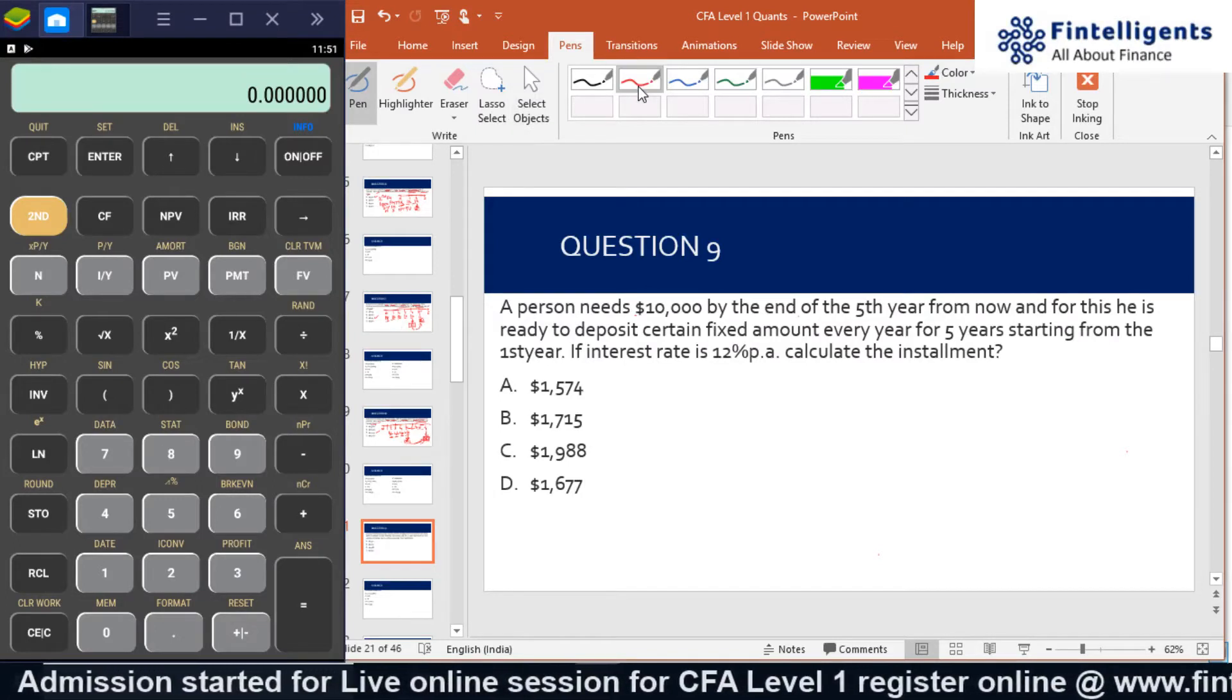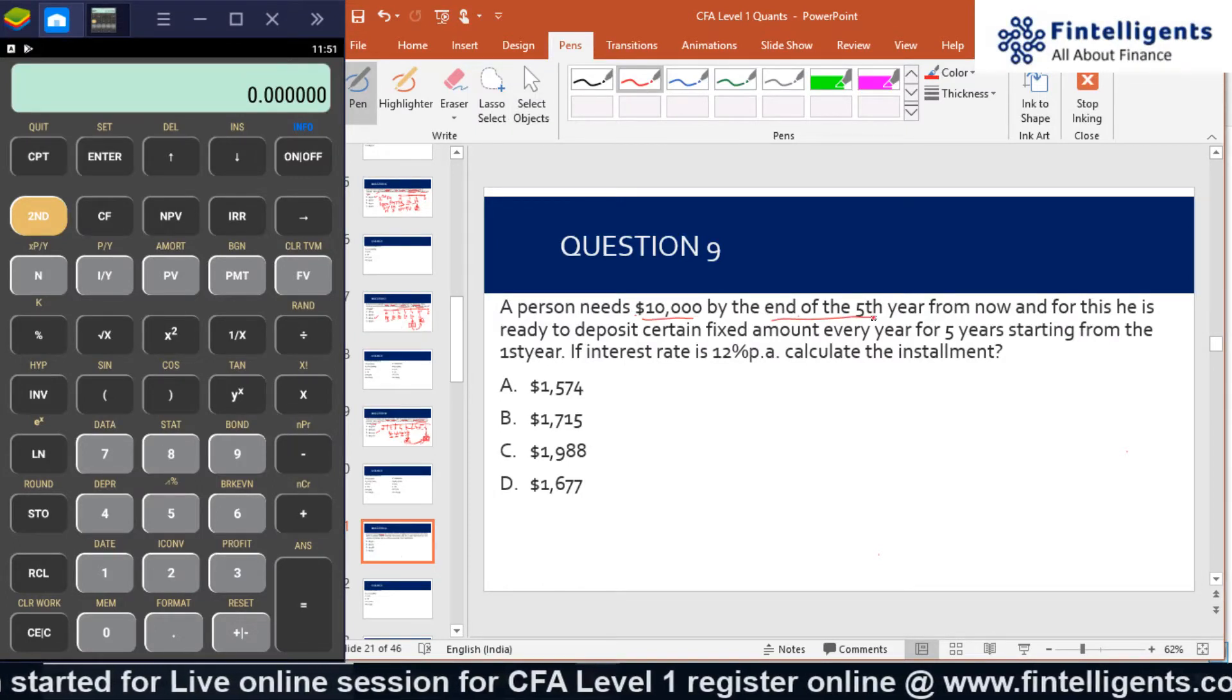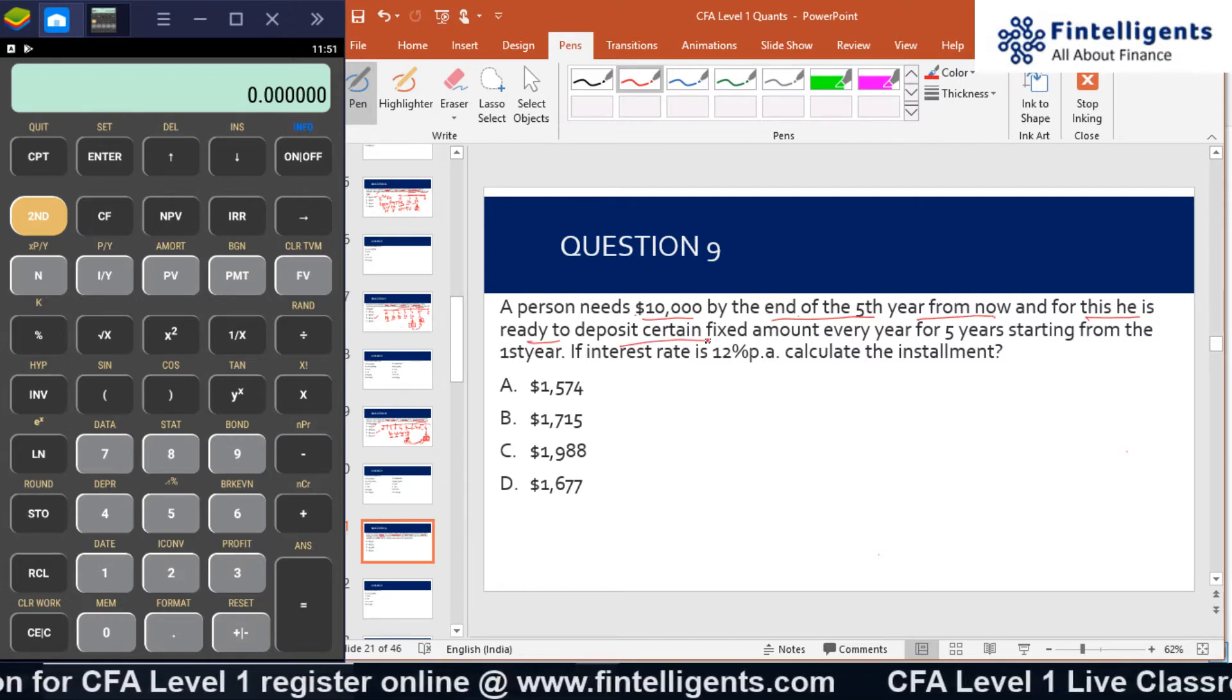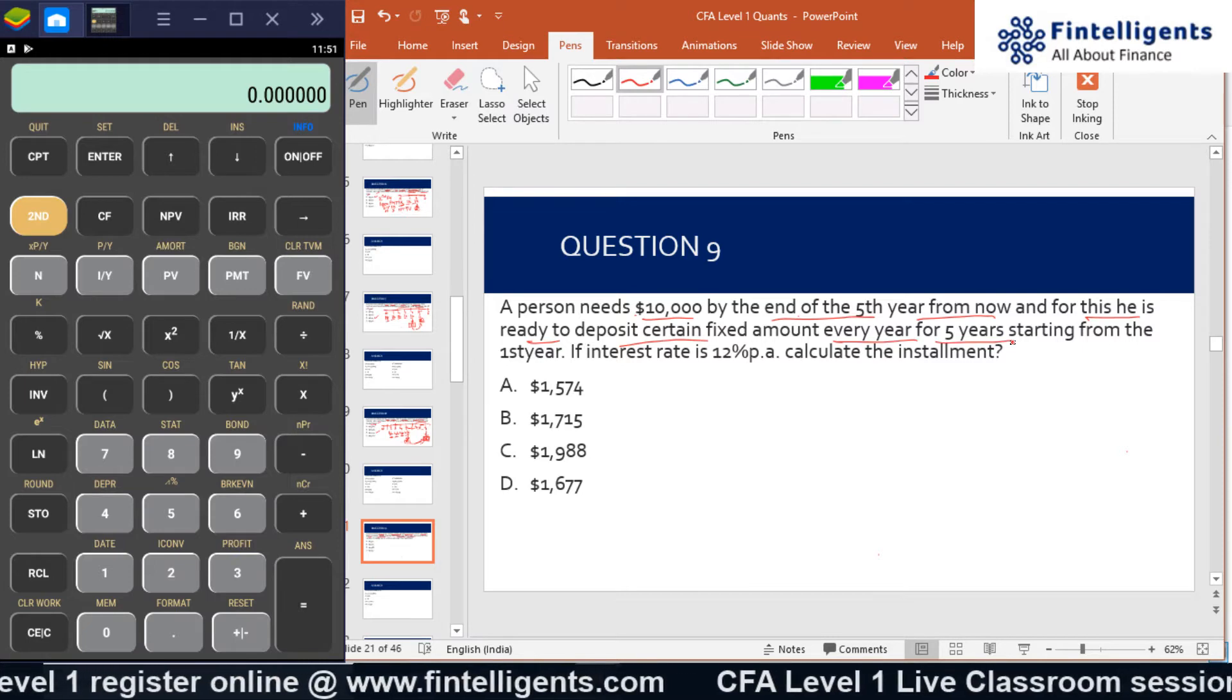Next calculation: A person needs $10,000 by the end of the fifth year from now, and for this is ready to deposit a certain fixed amount every year for five years starting from the first year.